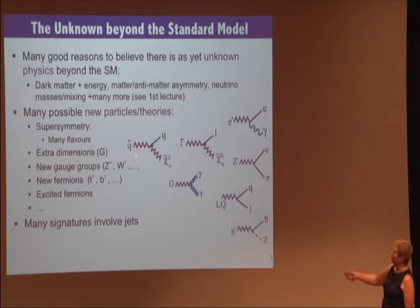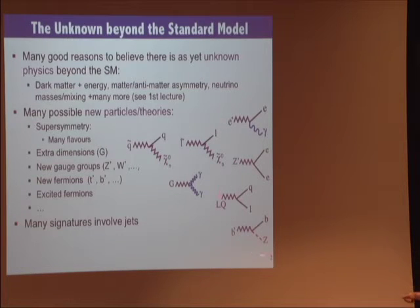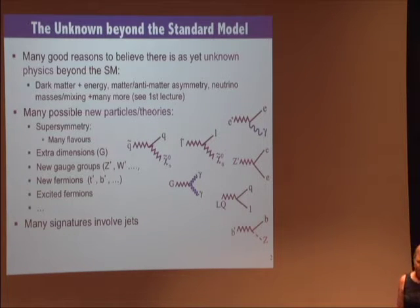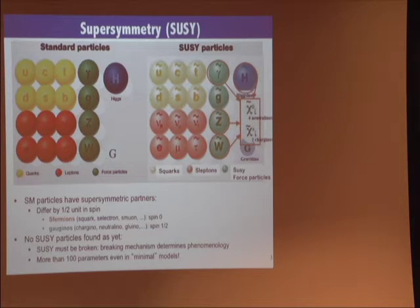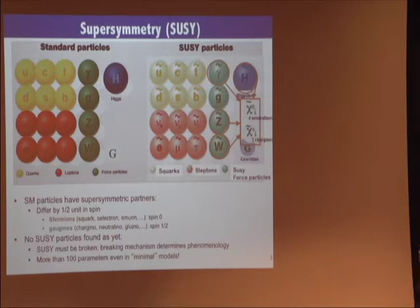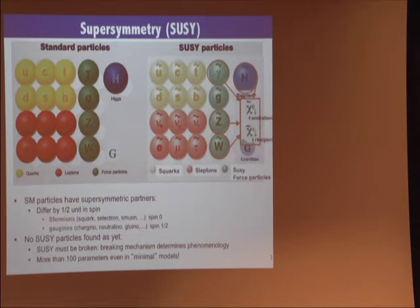For instance, in a supersymmetric diagram where a squark decays via a quark, or we can have leptoquarks, we can have a fourth generation B-prime decaying to BZ, etc. It's critical that the LHC can do searches with jets well. In particular in supersymmetry, the strongest constraints at this moment come from these searches.